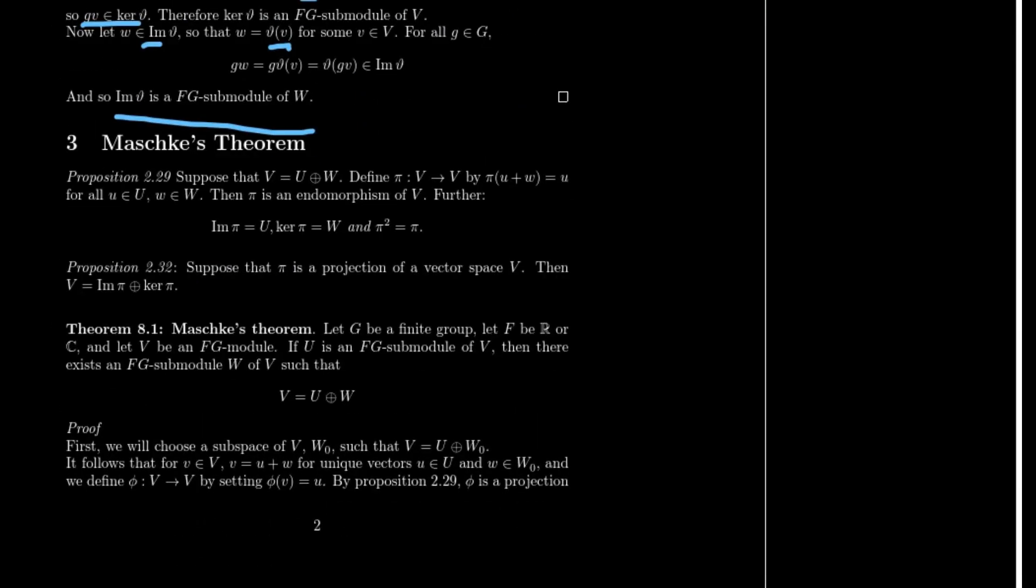Enter Maschke's theorem. I'm going to skip directly to Maschke's theorem. We're going to need a couple lemmas though that I'll come back to. So let G be a finite group and let F be either the real numbers or the complex numbers and let V be an FG submodule. Then if U is an FG submodule of V, there exists an FG submodule W such that V is going to be the direct sum of U and W. A direct sum meaning that for every vector in V, there is a unique sum of a vector in U and a vector in W that produces this.